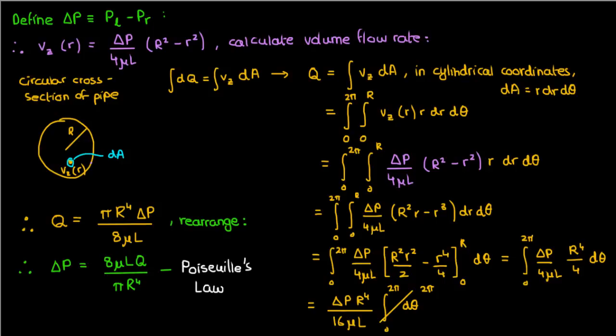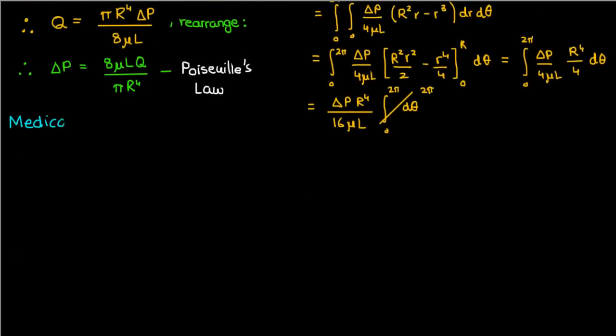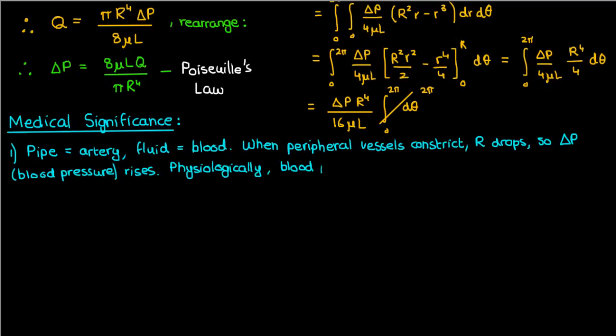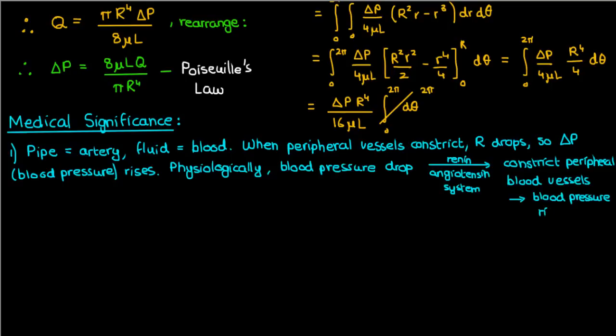Now before I end this video, let me take some time to briefly talk about the medical significance of this capital R to the 4 dependence. If you're a medical student, then you would much rather skip the math and go straight to the clinical application. Anyway, suppose our cylindrical pipe was an artery and that the fluid inside was blood. I'm aware that blood isn't exactly Newtonian, and that our arteries aren't exactly uniform, but it's a good enough approximation. If our peripheral blood vessels constrict, that means the radius of those blood vessels drops, and if capital R drops, the pressure difference across those vessels, in other words our blood pressure, increases. Physiologically, this is what happens thanks to the renin-angiotensin system when the blood pressure drops. When the blood pressure drops, the renin-angiotensin system gets activated and one of the downstream effects is to constrict our peripheral blood vessels, which according to Poiseuille's Law will bring our blood pressure back up again. Of course, this is very high yield to know and board examiners love going after this.